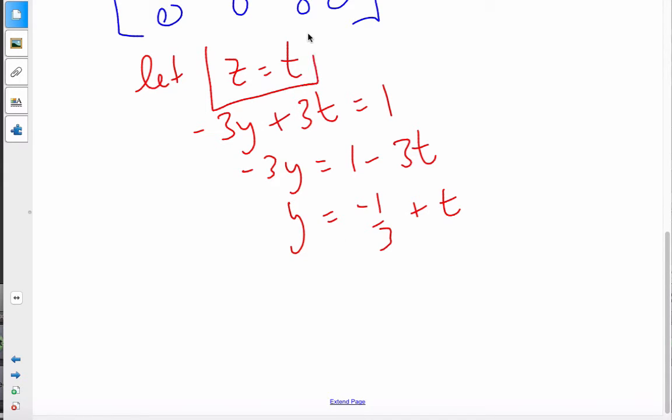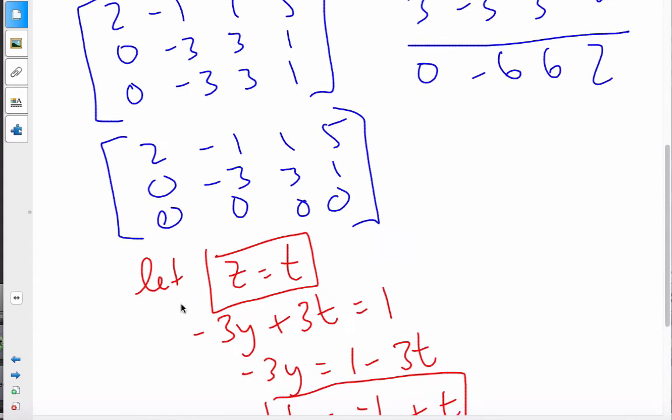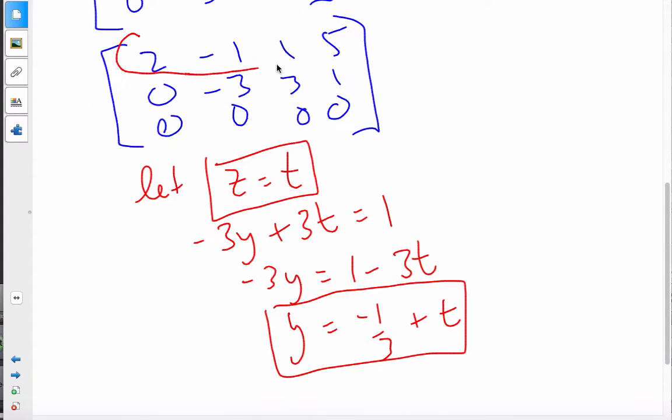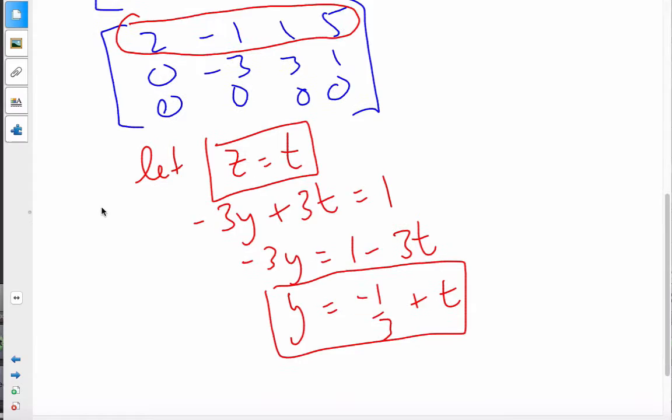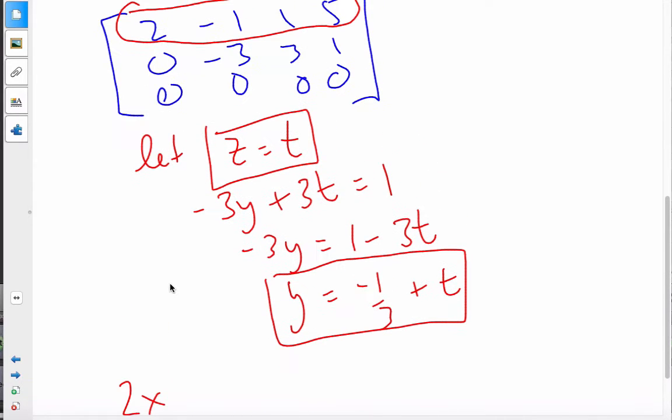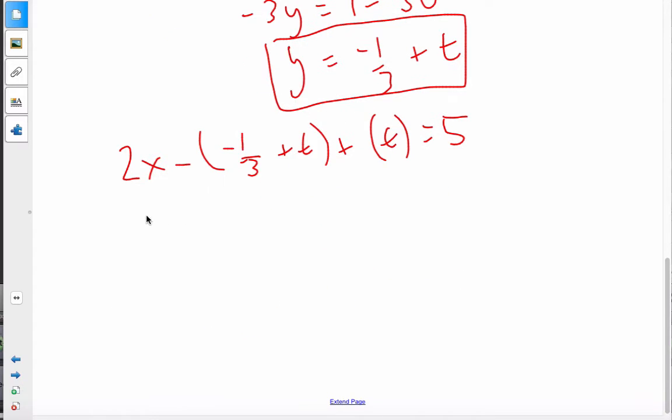Here is my z, here is my y, and I have to solve for my x, which I go into this equation here. I have 2x minus my y value plus my z value of t is equal to 5. And then I come along and I simplify. I get plus 1 third minus t plus t is equal to 5.